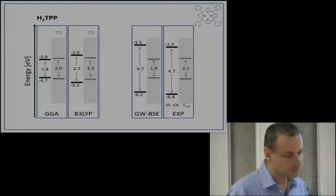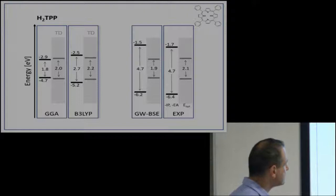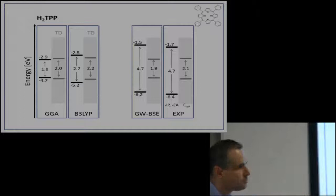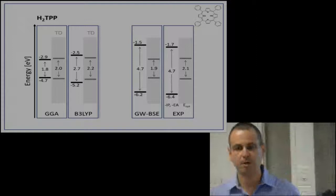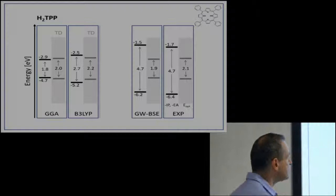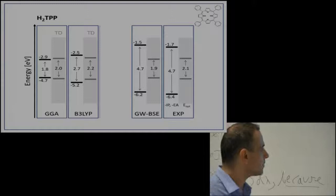So what happens if we move to a hybrid functional? In this case, it's B3LYP. The time-dependent DFT was okay and is okay. The eigenvalues are still way off, even though this is already a generalized Kohn-Sham scheme. The gap is larger because some of the discontinuity is now not just in the kinetic energy operator but also in the Fock operator. Yes, the gap is larger, but it's not nearly large enough.